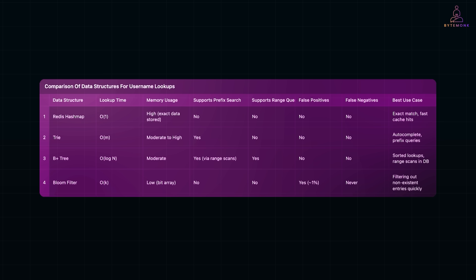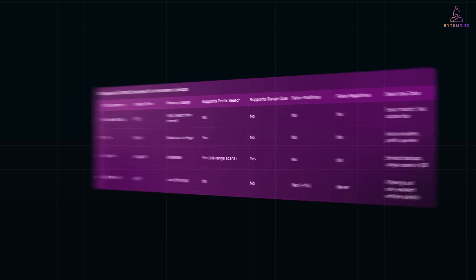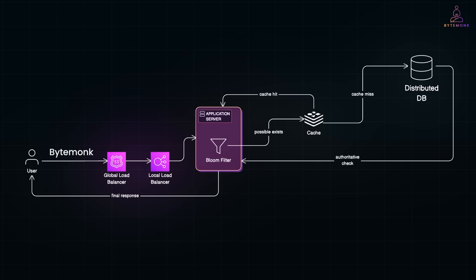But in real-world large-scale systems, it's rarely about picking just one. Instead, companies like Google, Facebook and Amazon combine these data structures strategically, layering them to maximize speed, reduce memory usage and minimize database load. Let's look at how these components come together in practice. Imagine you are checking if username ByteMonk is available. First, a load balancer routes the request. In large distributed systems, load balancing typically happens at two levels: global and local.